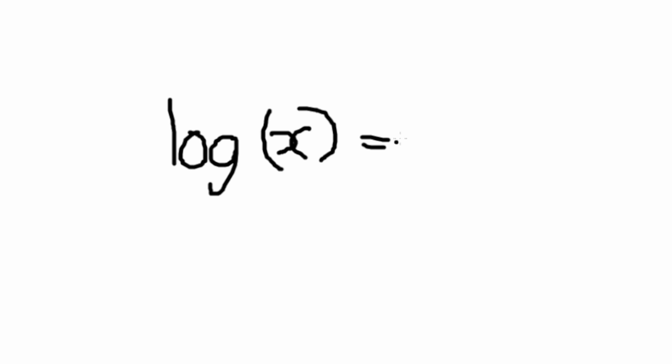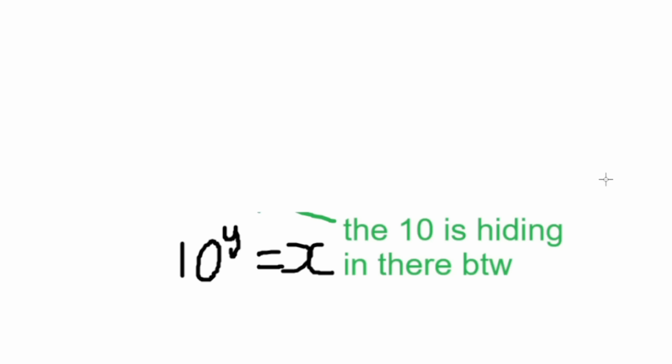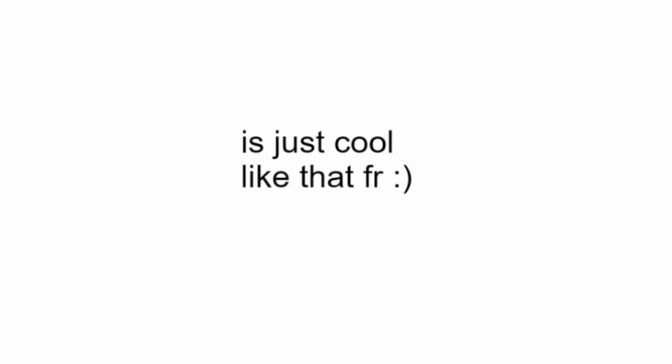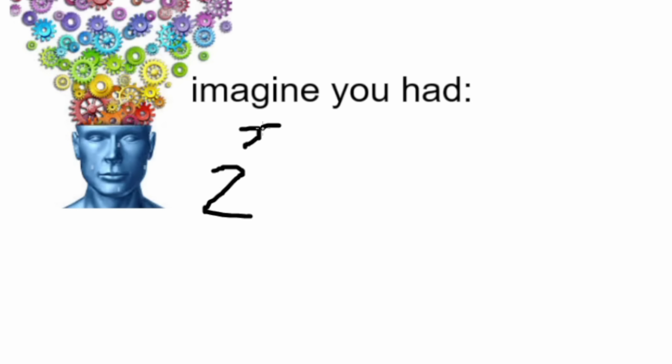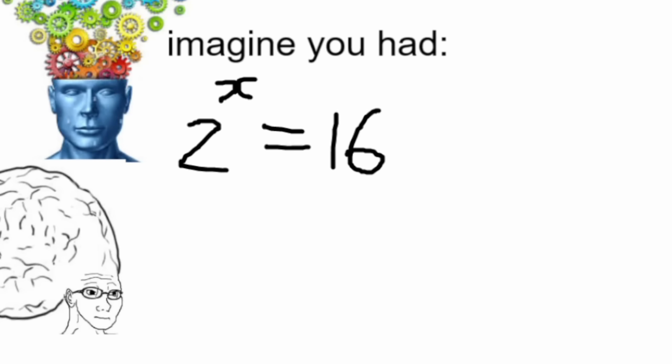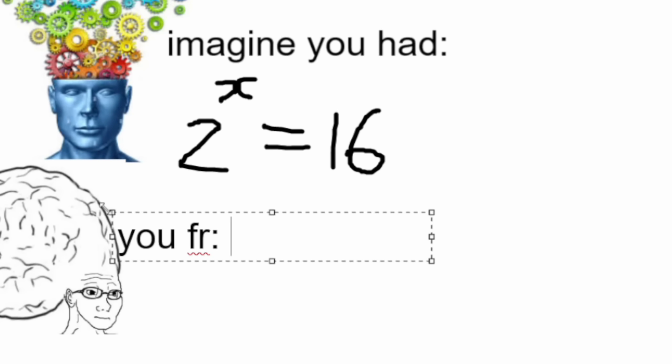When you just see log of x equals y, it is saying that 10 to the power of y equals x — the 10 is just implicit. They are useful. Imagine you had 2 to the power of x equals 16. Because you guys are big brain, you'll quickly see that x equals 4.